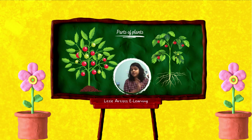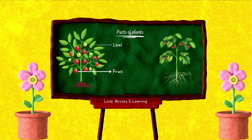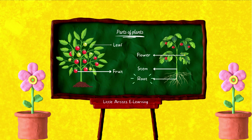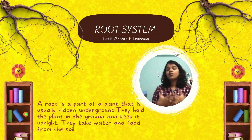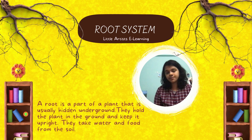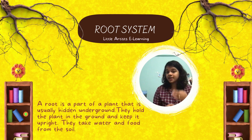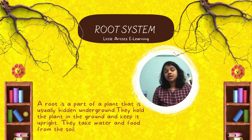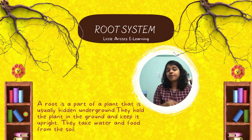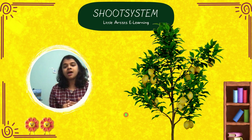With the help of these two diagrams, we can label the different parts of the plant. Root system — a root is a part of a plant that is usually hidden underground. Roots hold the plant in the ground and keep it upright. They also take water and food from the soil, which is very essential for the plant. Shoot system — a shoot is the part of the plant that grows above the ground level.